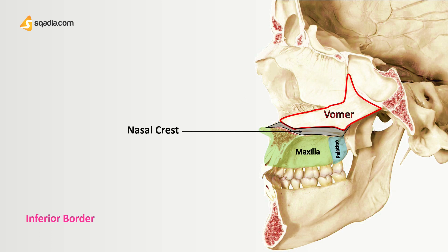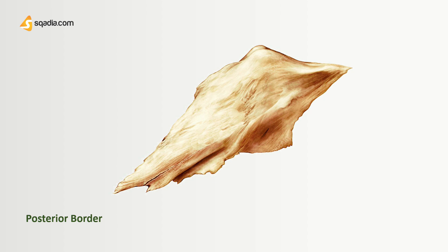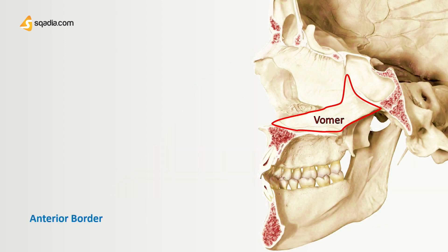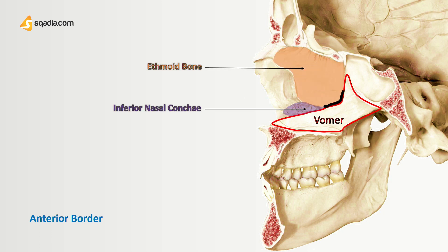The posterior border is free and separates the two posterior nasal apertures; it is non-articular. The anterior border is the longest and slopes downward and forward. In its upper part, it articulates with the perpendicular plate of the ethmoid and the inferior nasal conchae, and in its lower part with the septal cartilage.